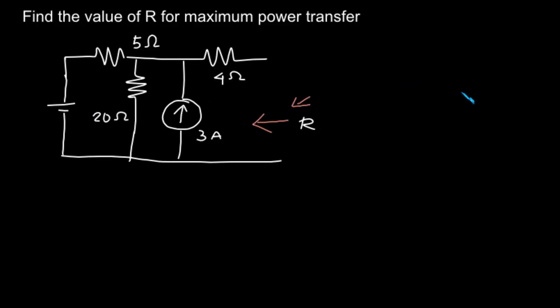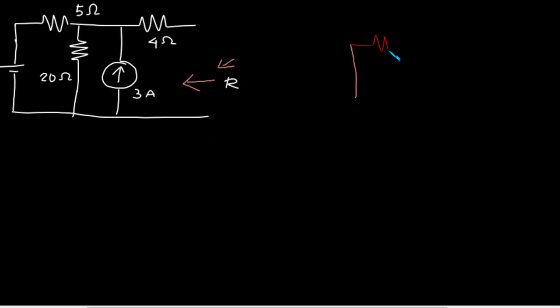What we have to do? We have to short-circuit the voltage sources and open-circuit the current sources, and find out the resistance between these two terminals.